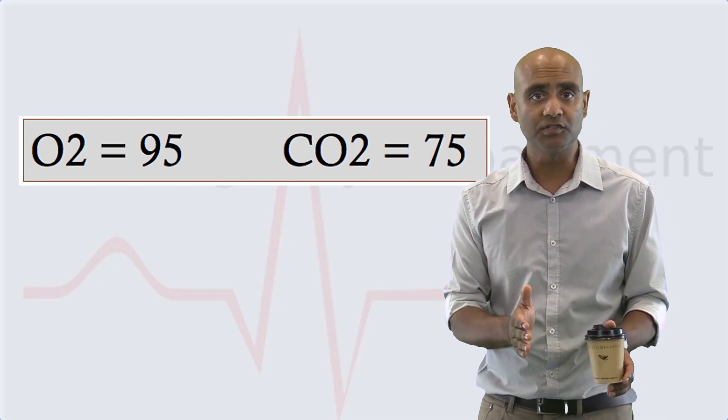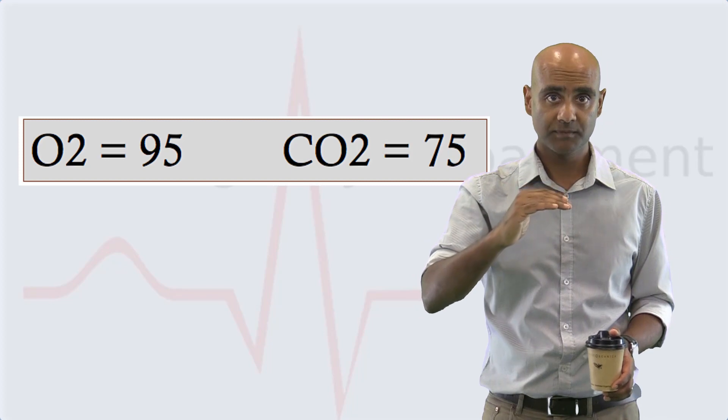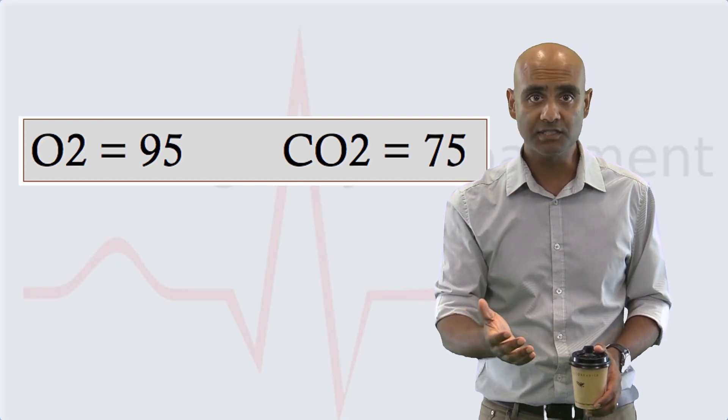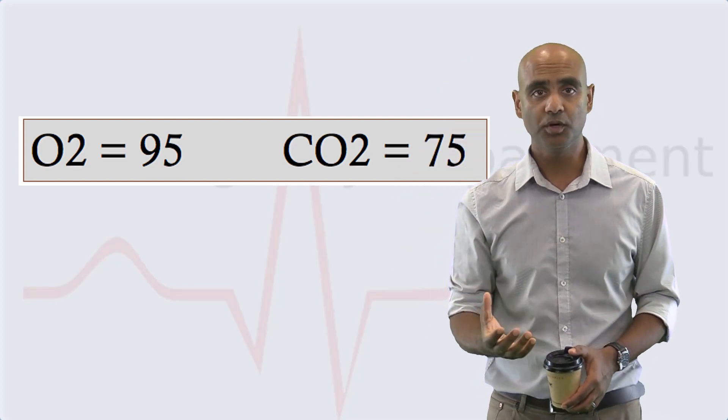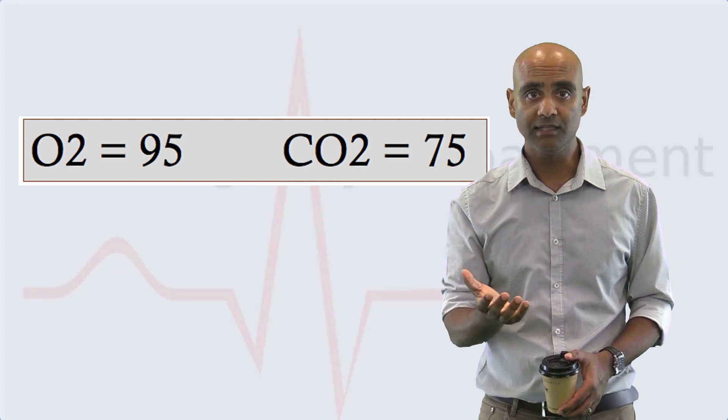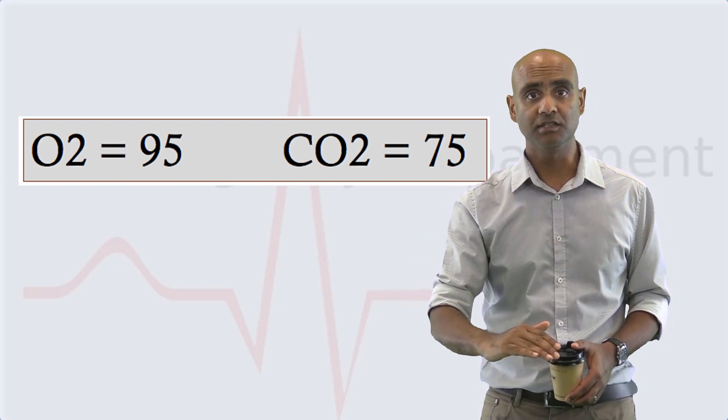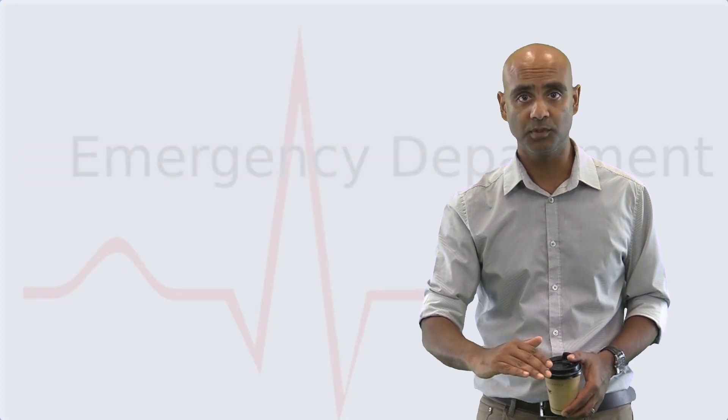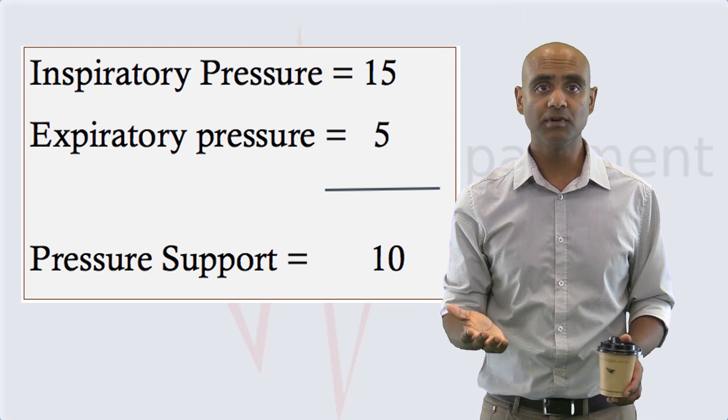Now a knee-jerk response will be to increase both his IPAP and his CPAP. But what he actually needs is greater pressure support, which is the difference between the two, and this will help decrease his work of breathing. So what we should do in this situation is decrease his expiratory pressure, as he no longer requires the hypoxic support, and increase his inspiratory pressure to combat his rising CO2.